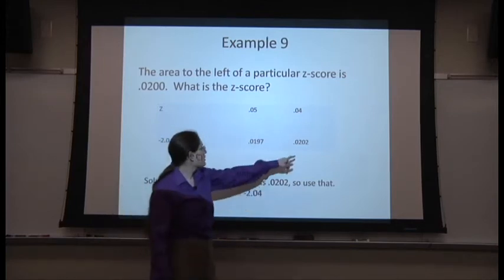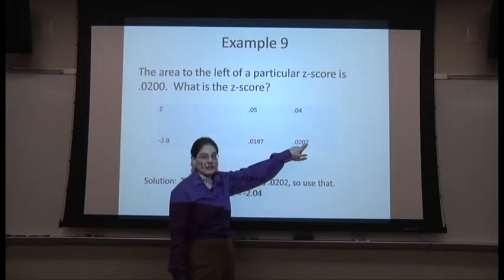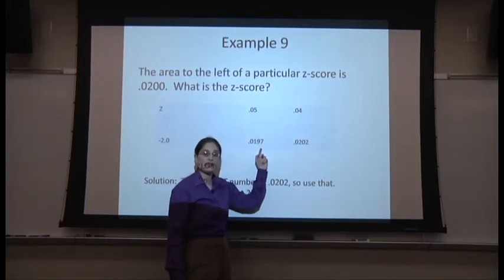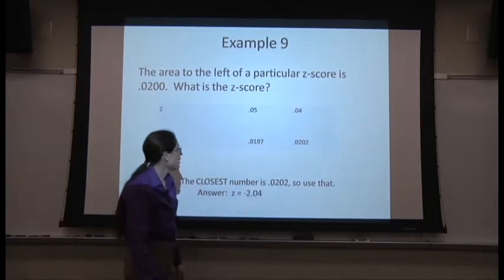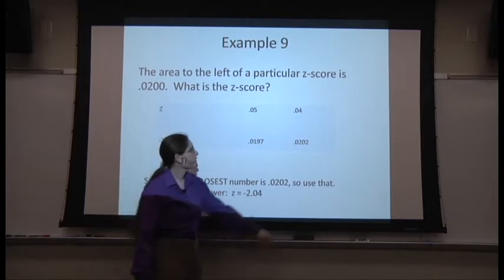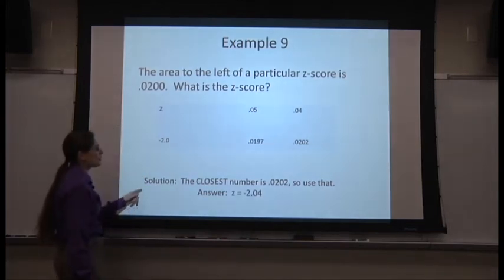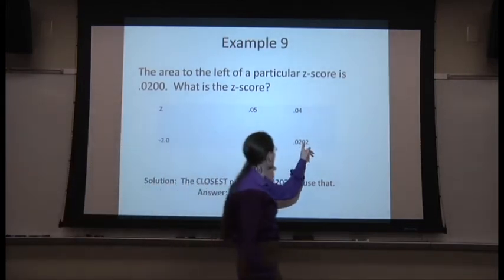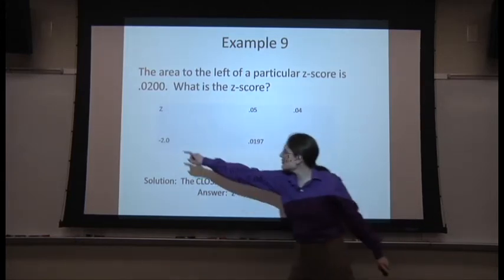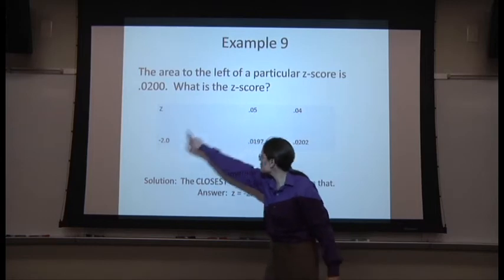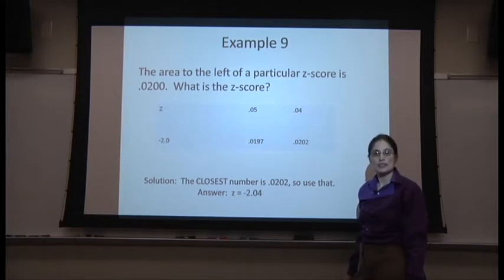I found 0.0202, which is a little bit more, and 0.0197, which is just a little bit less. Which one's closer? Yep, the bigger one. This one's closer. So we're going to use this table value, which corresponds to a z-score of negative 2.04. So that is the closest z-score.